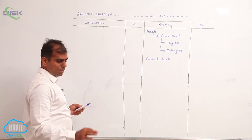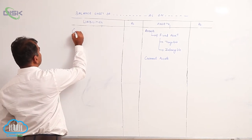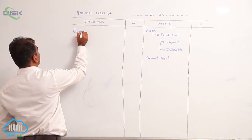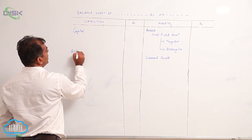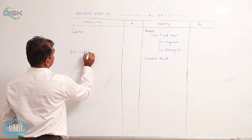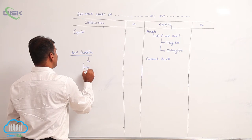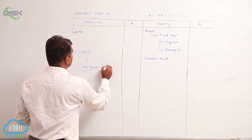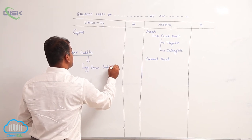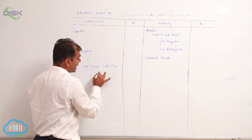Then on the liability side, generally you have three things. One is capital. As per the accounting equation, remaining all are external liabilities. These external liabilities are classified into long-term liability—any amount which you have to pay after more than one year. The year of payment is always greater than one year.